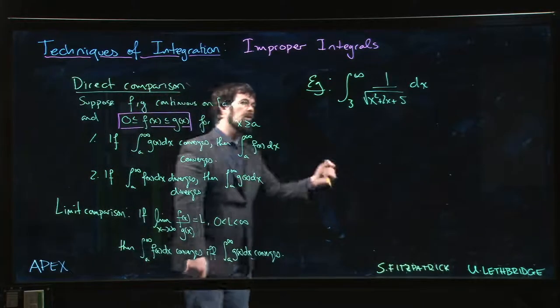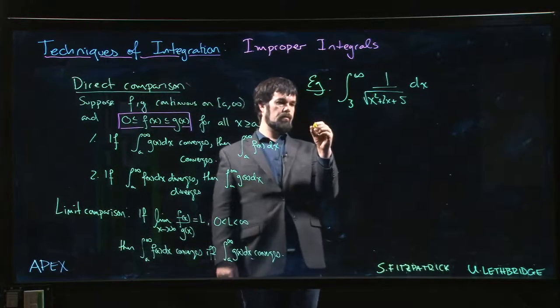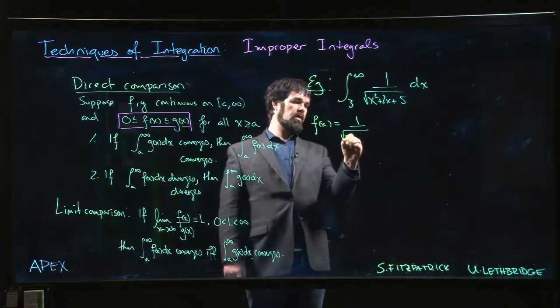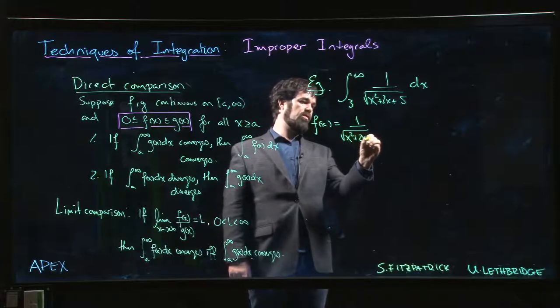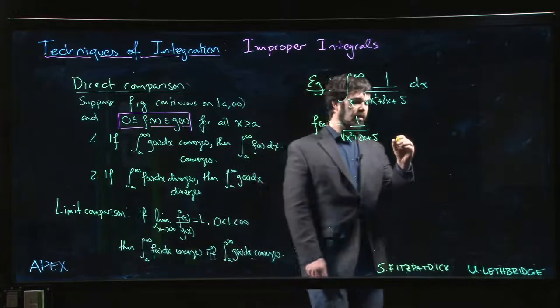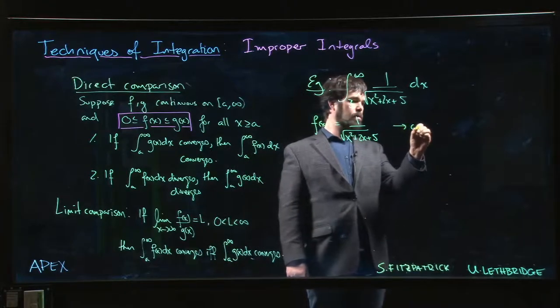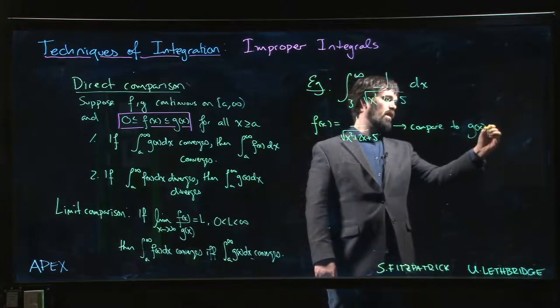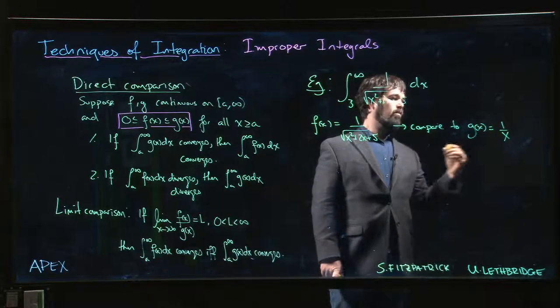We have our f of X is going to be 1 over the square root of X squared plus 2X plus 5, and we want to compare to g of X which is 1 over X. So when we do the limit as X goes to infinity of f of X over g of X...